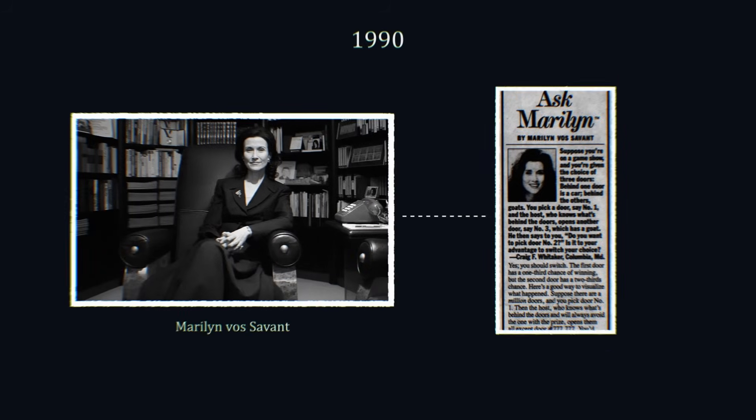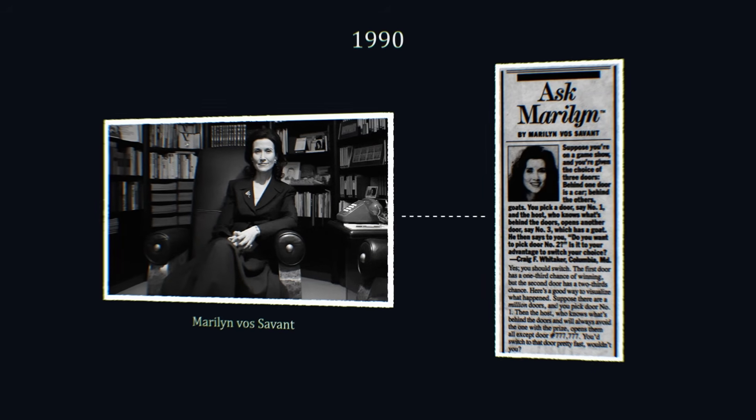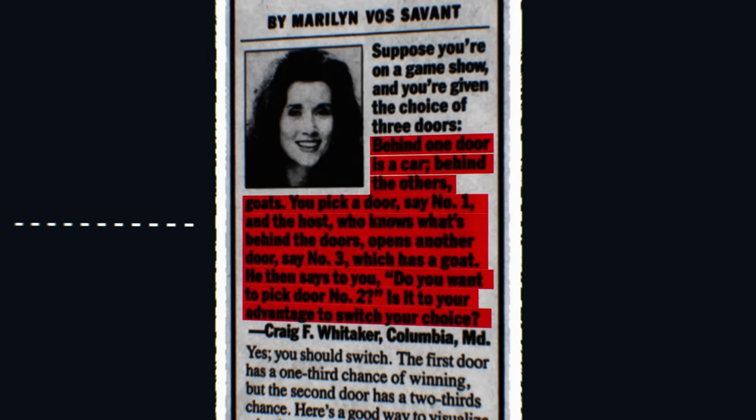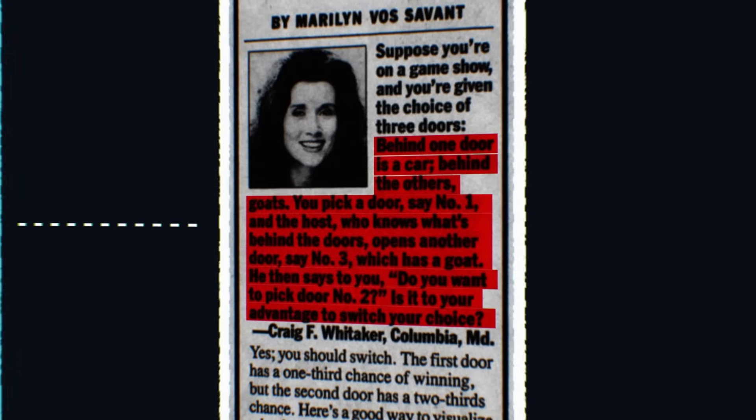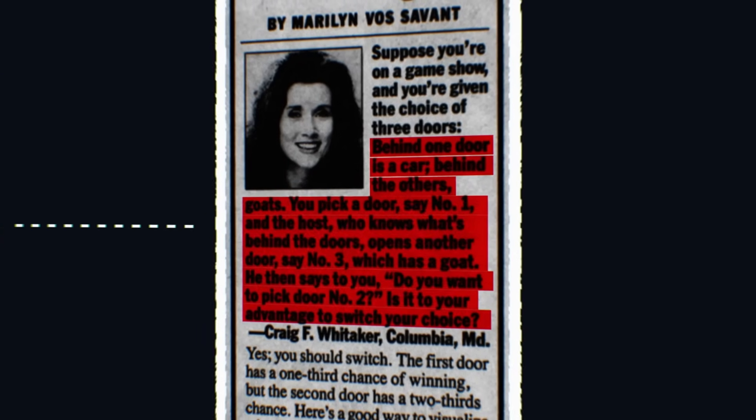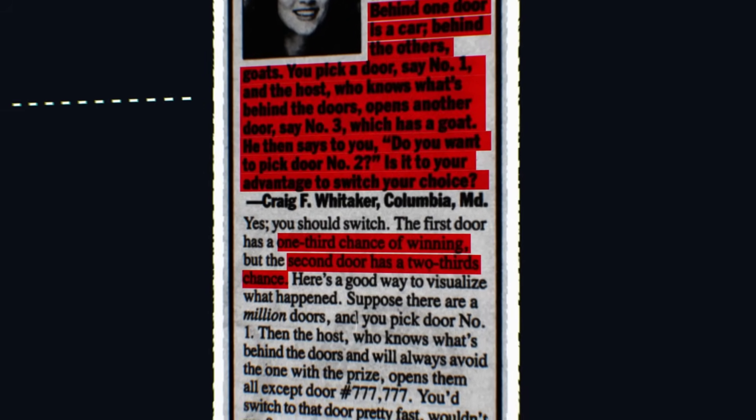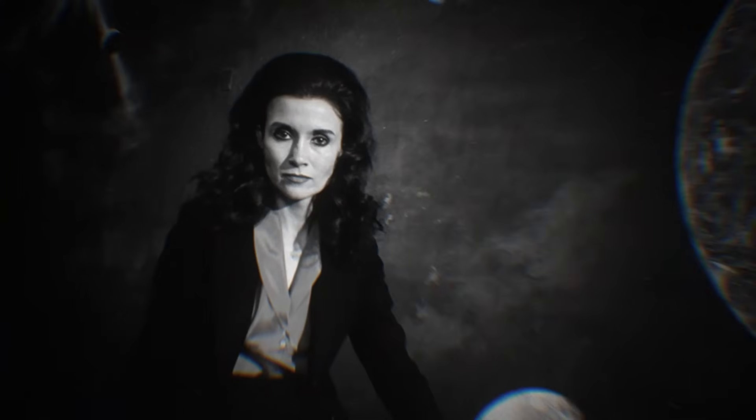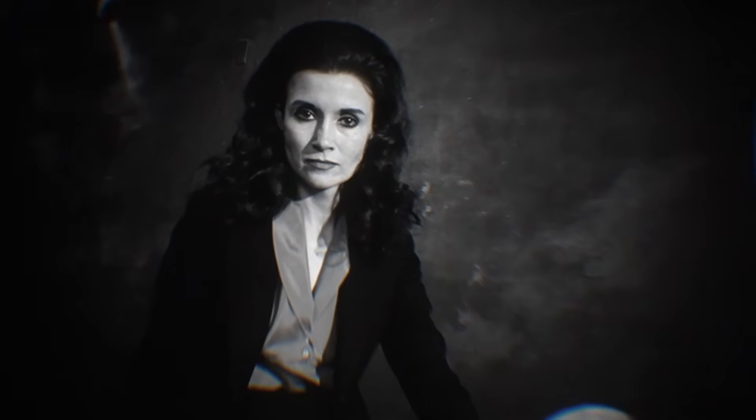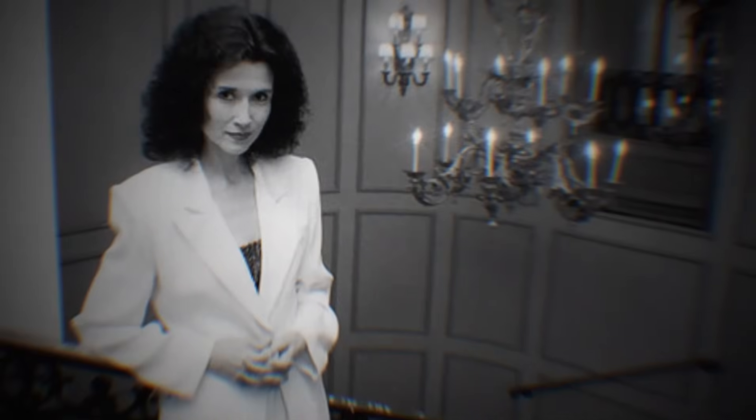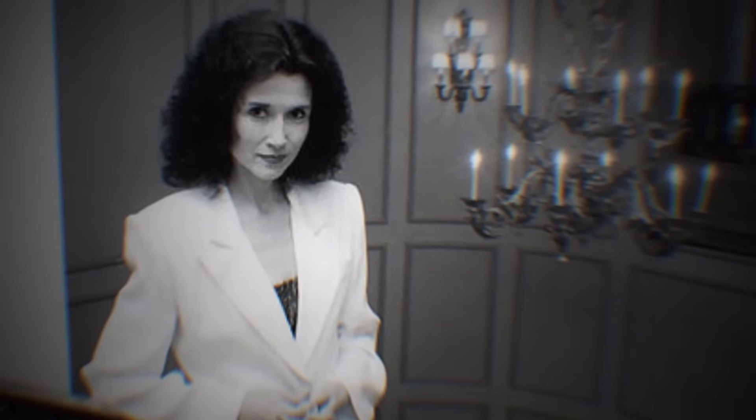Fast forward to 1990 when Marilyn Vos Savant introduced a simplified version of the scenario in her Ask Marilyn column. In her version, Monty always reveals a goat and always gives the player the chance to switch. The surprising result? Switching doubles your odds of winning, boosting them from one-third to two-thirds. That's when the real controversy started. Professors, mathematicians, and skeptics flooded Vos Savant with letters, insisting she was wrong. Some refused to believe it, even when the math clearly showed otherwise.